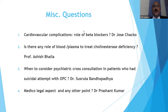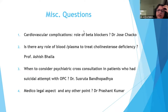How to differentiate OPC from carbamate poisoning: Dr. Kirti explains that in OPC, cholinesterase depression is sustained, whereas in carbamate it is transient. Initially manage like organophosphorus, but carbamate patients generally do not need prolonged ventilation — most come out on their own within 48 hours.